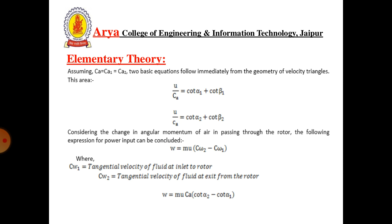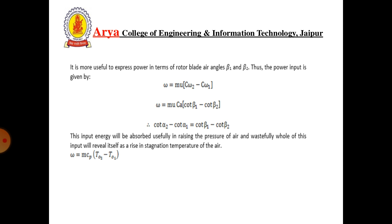Assuming Ca1 = Ca2 = Ca, two basic equations follow from the geometry of the velocity triangle: U/Ca = cot α1 + cot β1. Considering the change in angular momentum of the air passing through the rotor, the power input is W = m·U(Cw2 − Cw1), or equivalently W = m·U·Ca(cot β1 − cot β2), since cot α2 − cot α1 = cot β1 − cot β2.